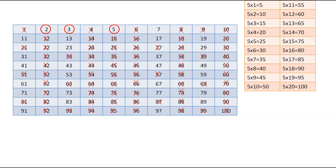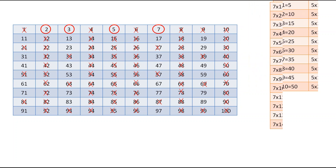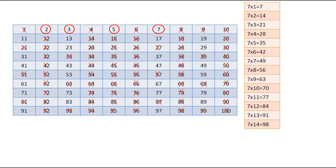6 is already scratched, so we move to 7 and circle it. Checking the table of 7 up to 100: 14 already scratched, 21 scratched, 28 scratched, 35 scratched, 42 scratched. 49 is not scratched — scratch it. 56 already scratched, 63 already scratched, 70 already scratched. 77 is not scratched — scratch it. 84 scratched. 91 is not scratched — scratch it. 98 is already scratched.